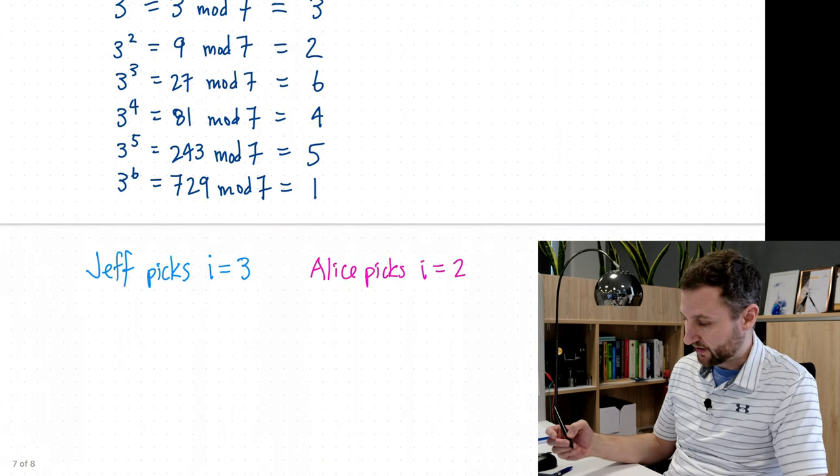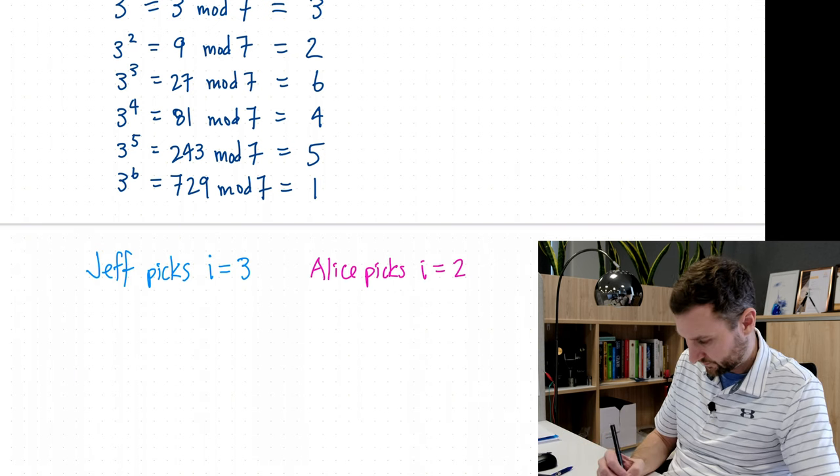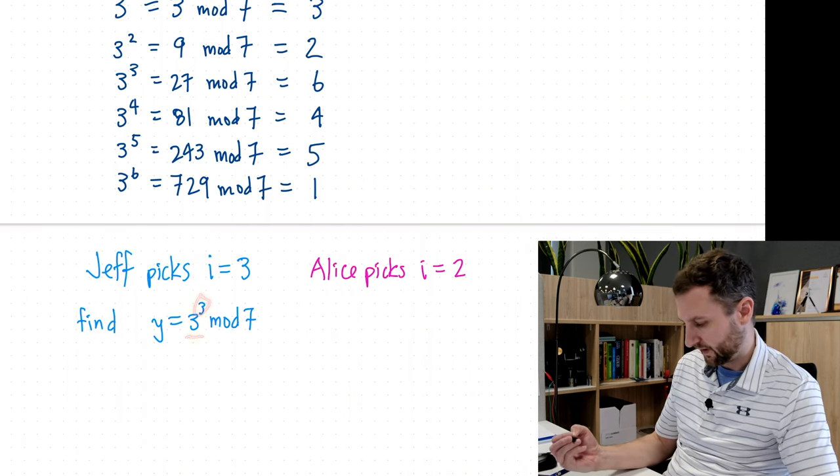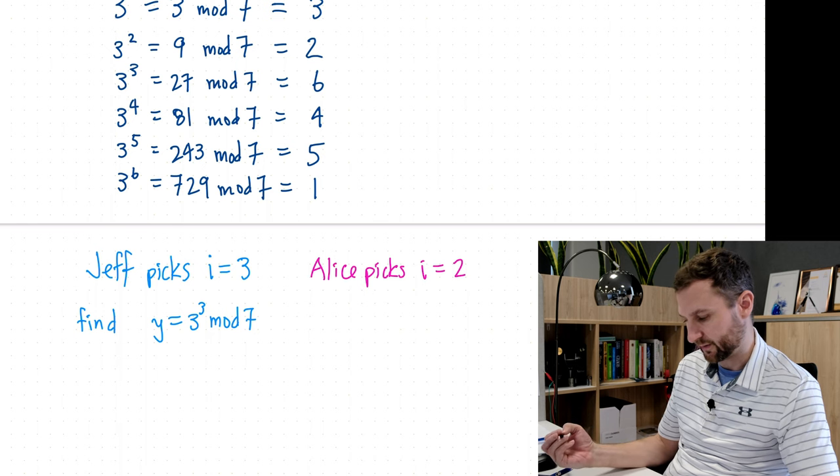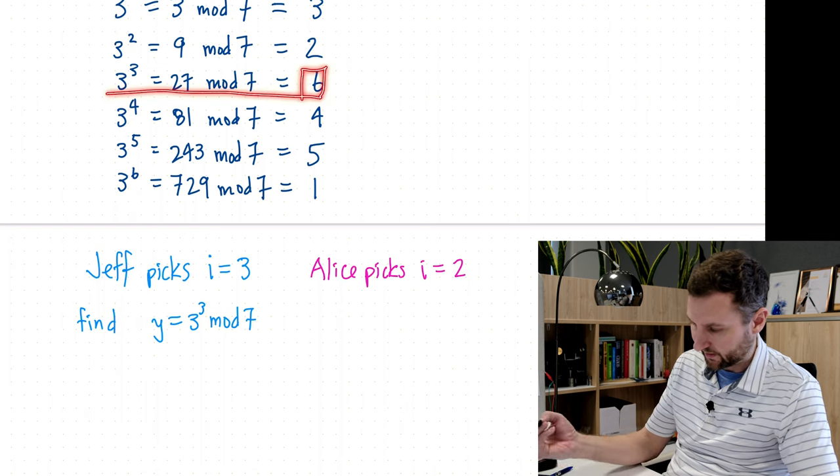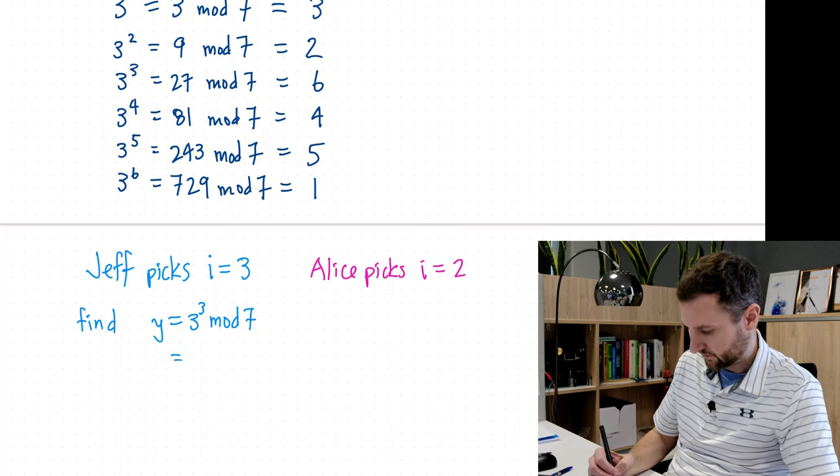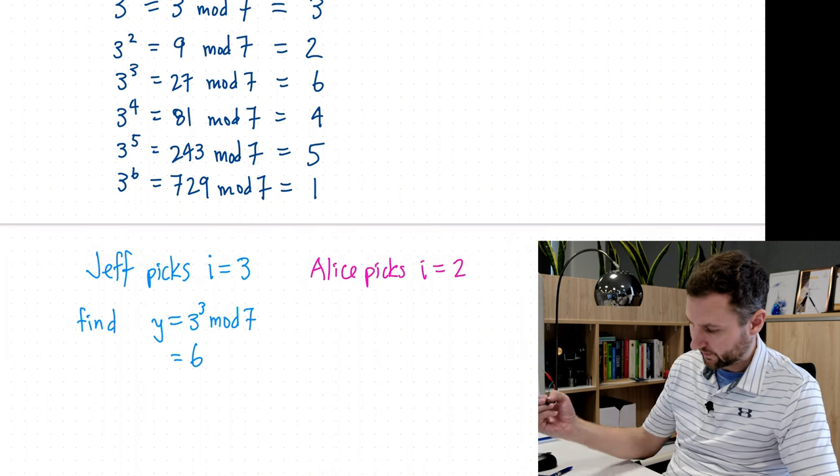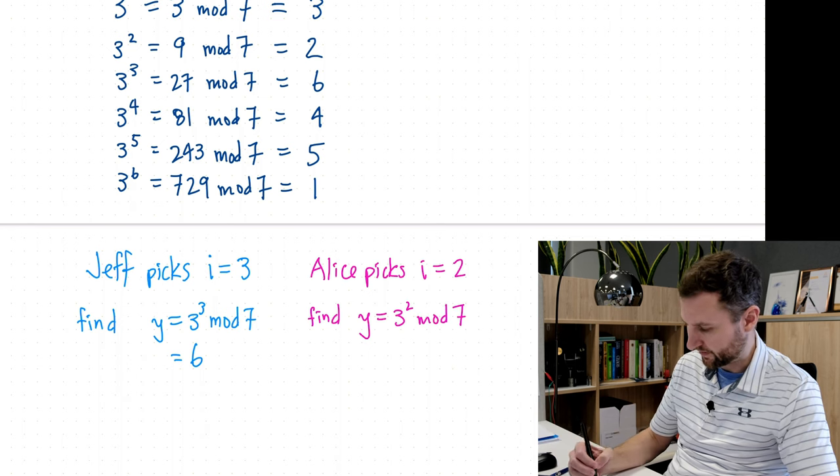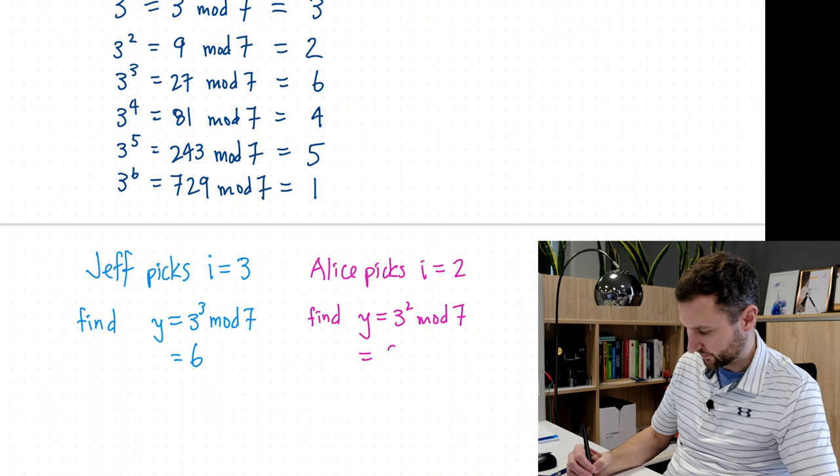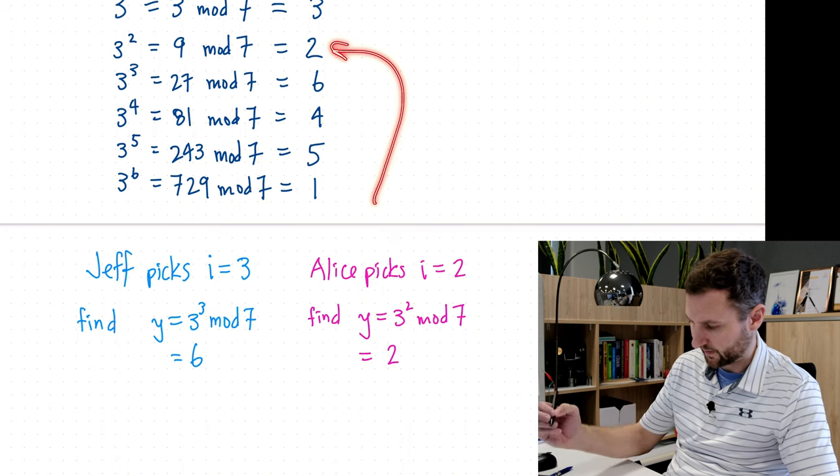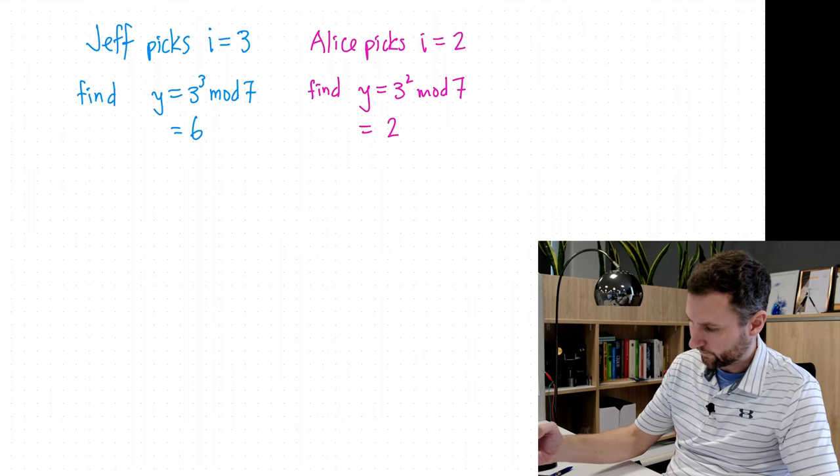Next up we're each going to do a computation that we've already done, but I will write it out again. So what I'm looking for is there's my number 3, I've already chosen 3 and 7 in advance, so I'm just going to compute 3 to the 3 mod 7, so that's 27, or I could look up here and see that it is 6. I'll do the same thing for Alice, and so she's looking for 3 squared mod 7, so that's 9 mod 7, and that equals 2. Again, this 2 is found right here in the table.